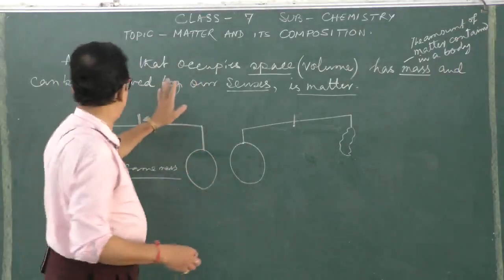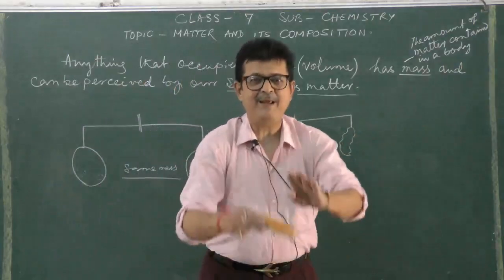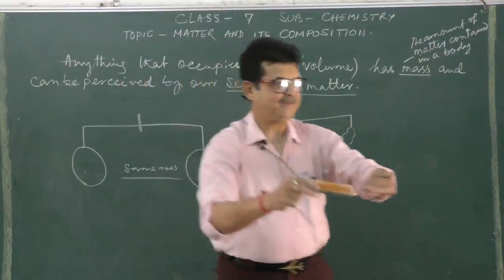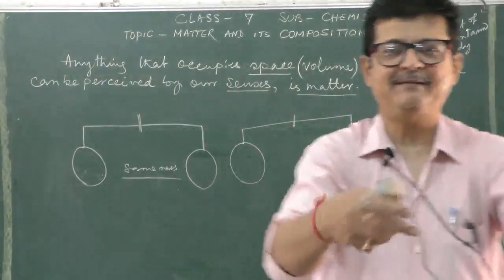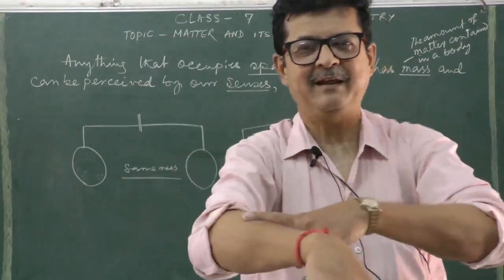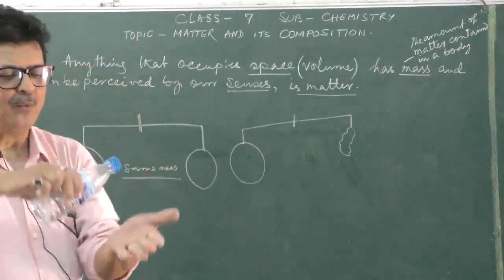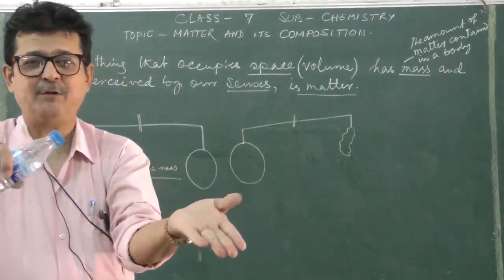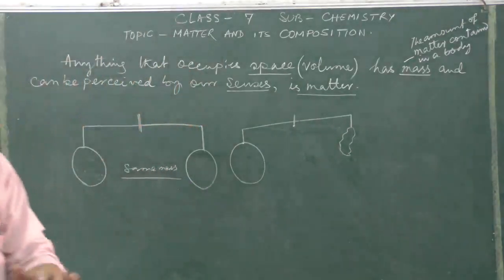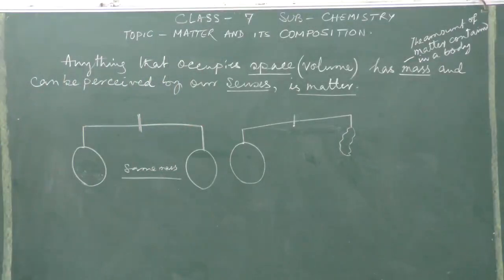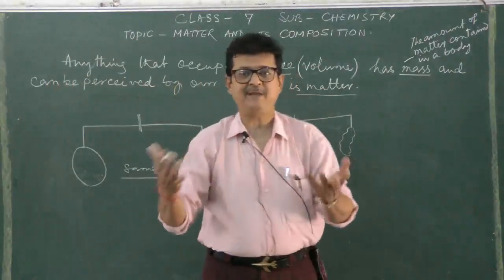And third clause, that is perceiving by the physical senses. Simply I can touch it. If I go in front of the fan, I can easily feel that the breeze is there. That shows gas also has got the water at the same time. Then I can take water on my hand, that also proves that it can be felt by the physical senses. So third point, third clause is perceiving by the physical senses. We can call them as matter.